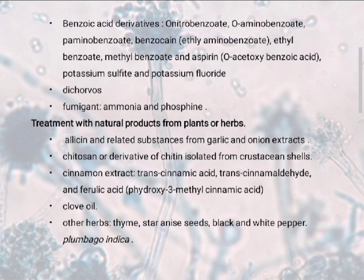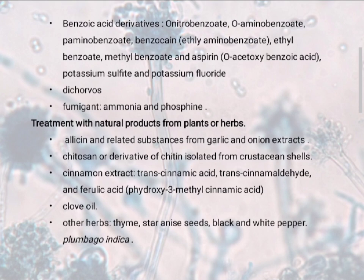Benzoic acid derivatives include ortho-nitrobenzene, aminobenzoate, para-aminobenzoate, and benzocyanine. Potassium sulfate and potassium fluoride are also used. Fumigants: ammonia and phosphine mixed together are also used for controlling fungus. Treatment with natural products from plants and herbs: allicin and related substances from garlic and onion extracts, chitosan — derivatives of chitin isolated from crustacean shells — cinnamon extract, trans-cinnamic acid, trans-cinnamaldehyde, and ferulic acid (5-hydroxy-3-methyl cinnamic acid) are used. Other examples are clove oil and herbs such as thyme, star anise seeds, black and white pepper, plumbago, indigo, etc. These are some of the control measures against the growth of fungus.